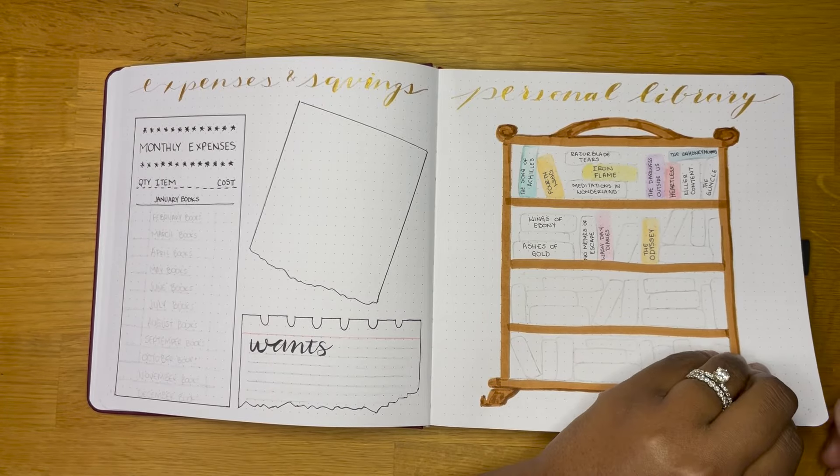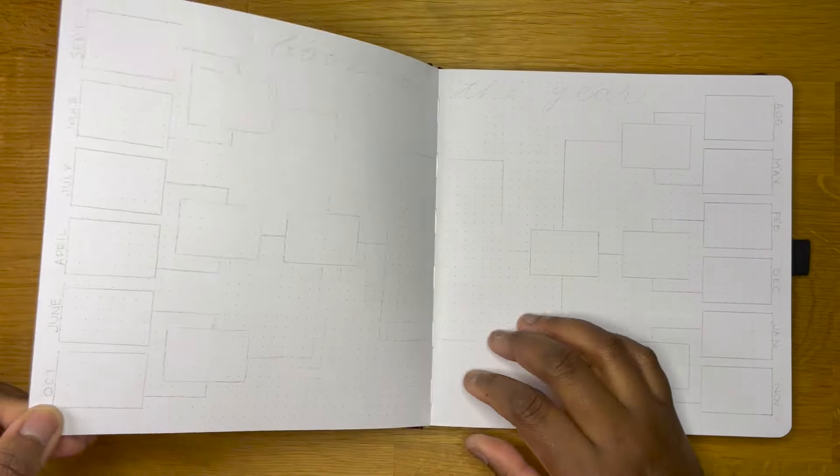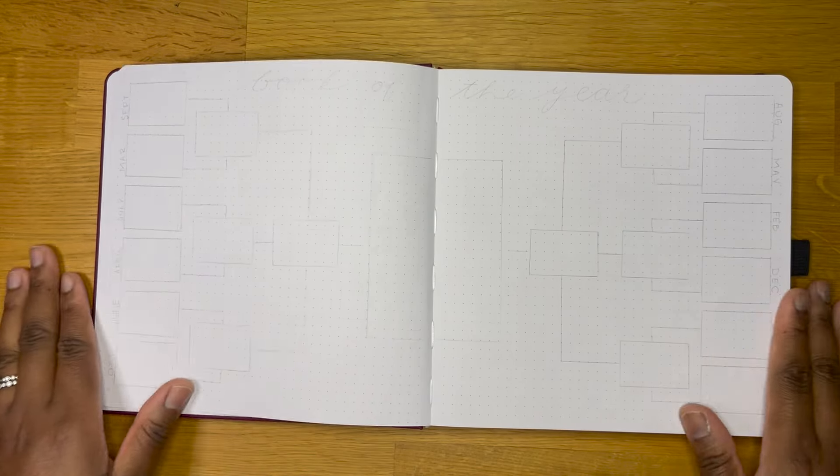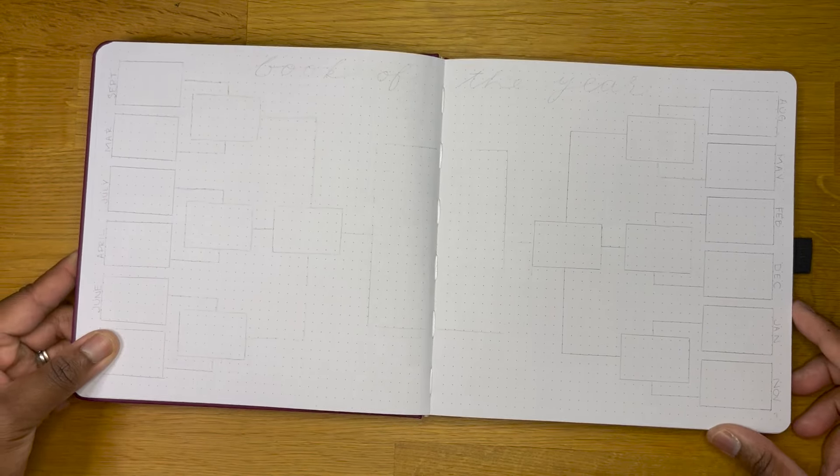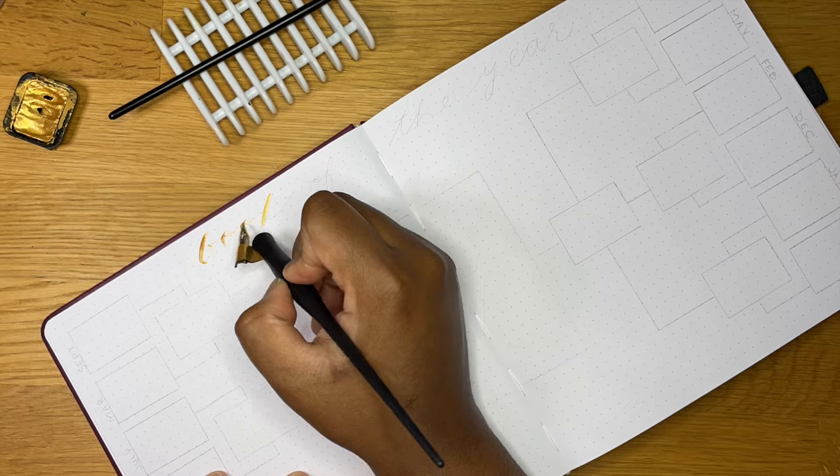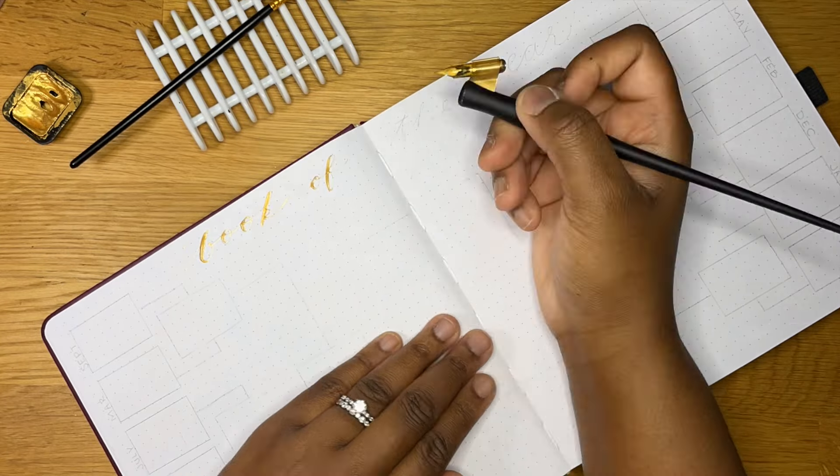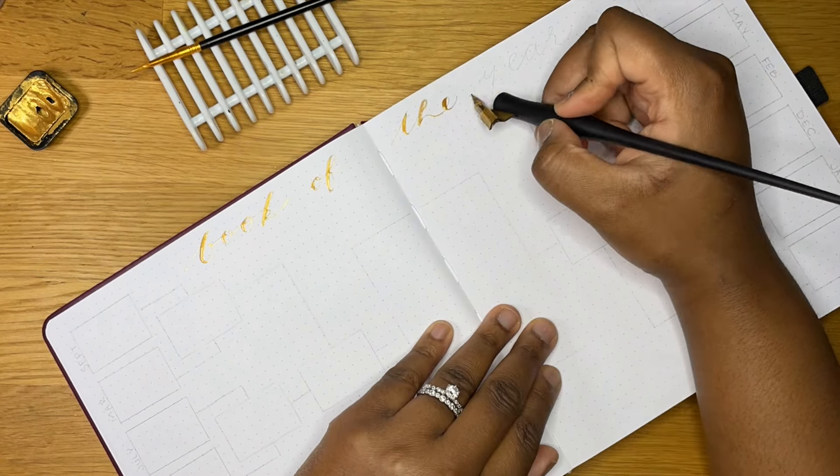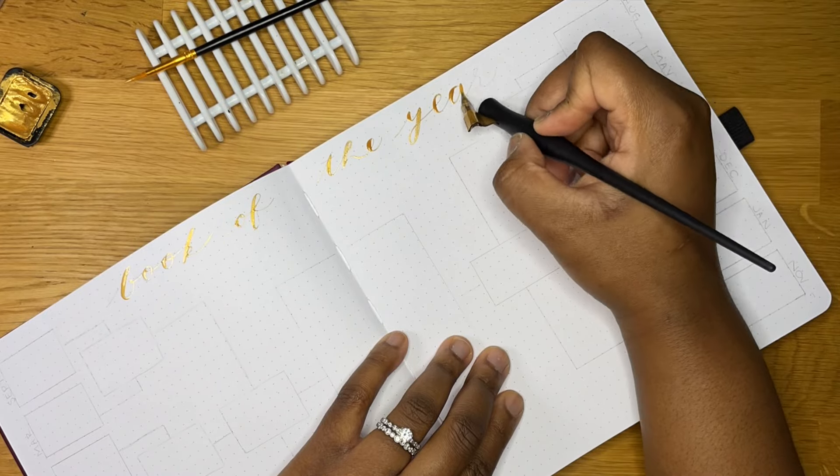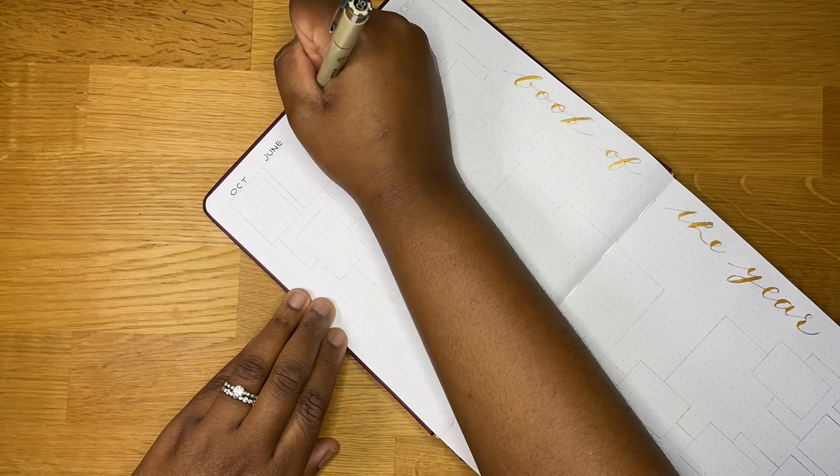The next spread is my book bracket to help me find my favorite book for the year. This is where the size and shape of this journal comes in handy. I love how big this is and how I'm able to put the book covers for each of the months, and then I have the giant book cover for my favorite book in the middle. I love how this came out.